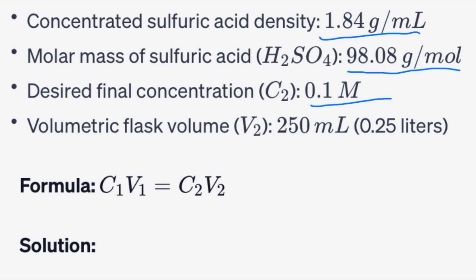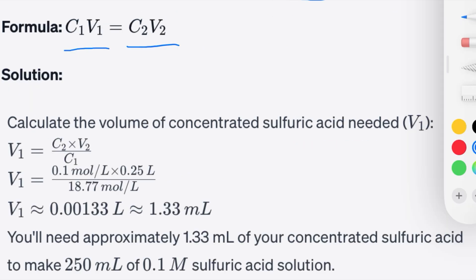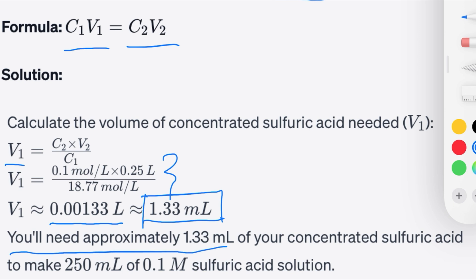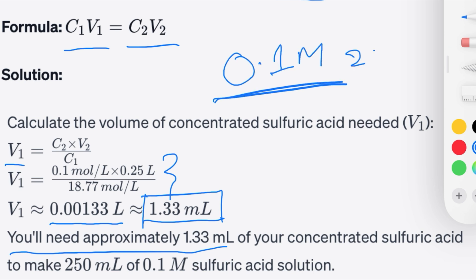We have a 250 ml volumetric flask. The formula is C1V1 = C2V2. Let's calculate the volume of concentrated sulfuric acid needed: V1 = (C2 × V2) / C1. After putting in all the values, I get 0.00133 liters, or 1.33 ml of sulfuric acid.